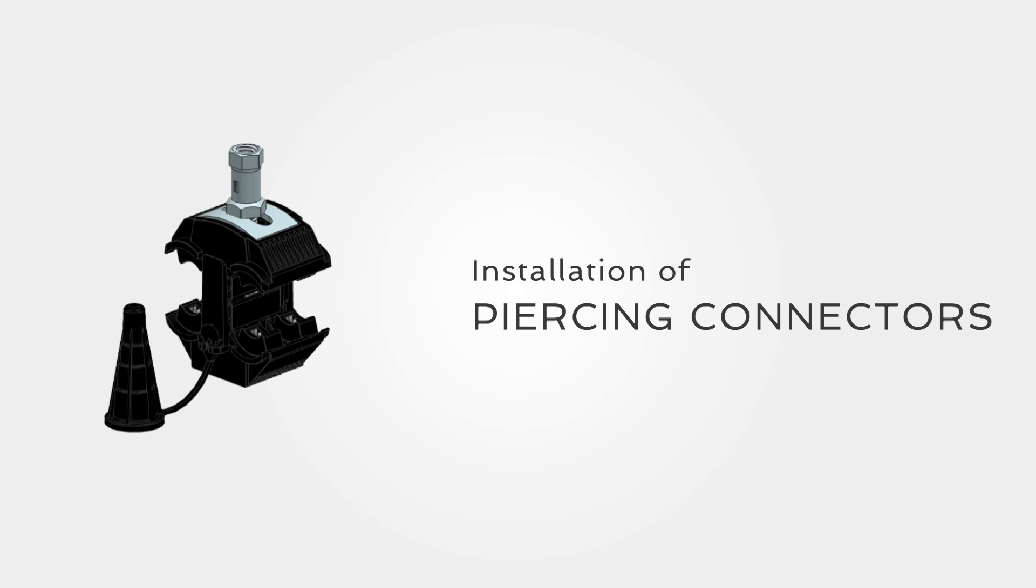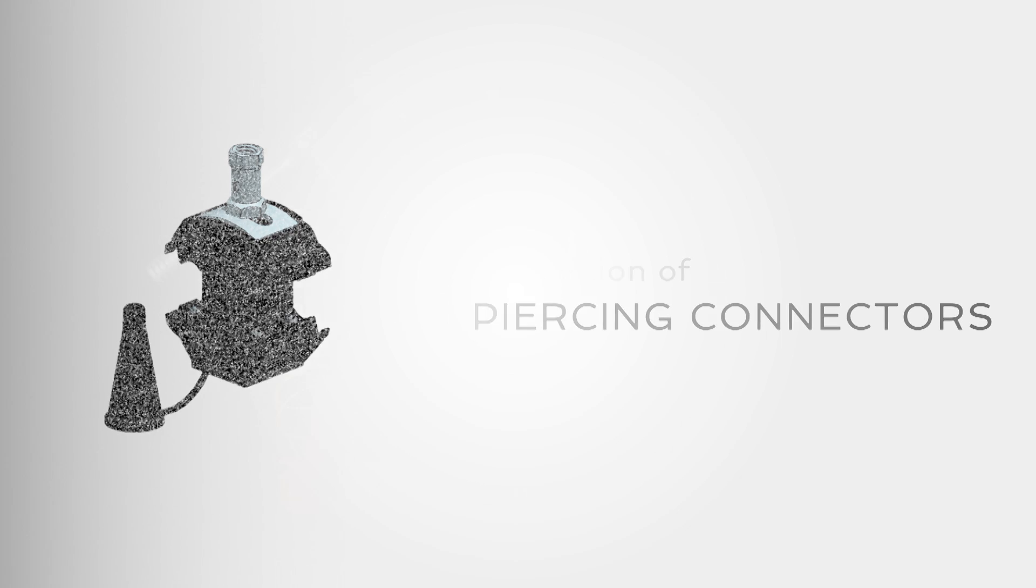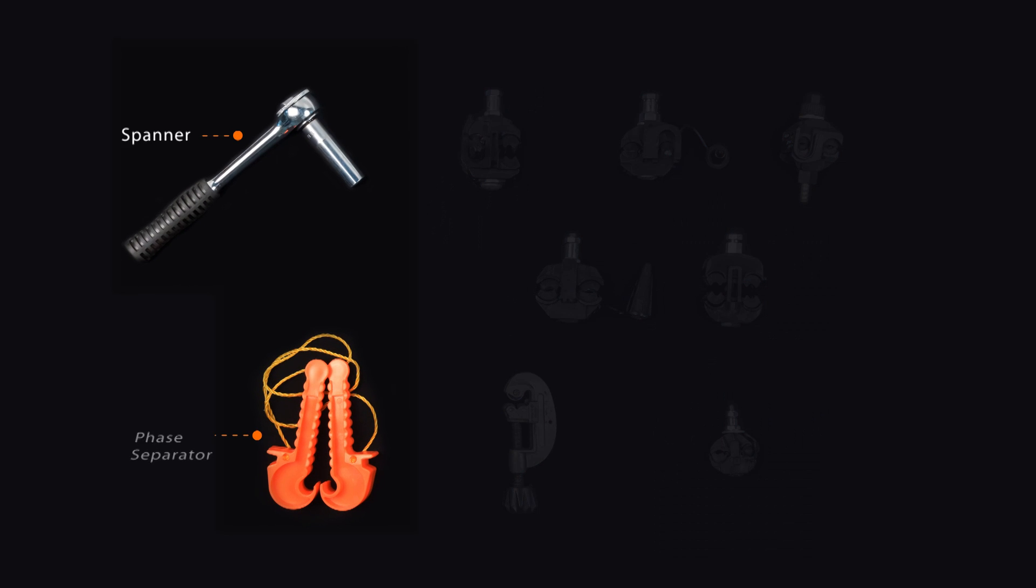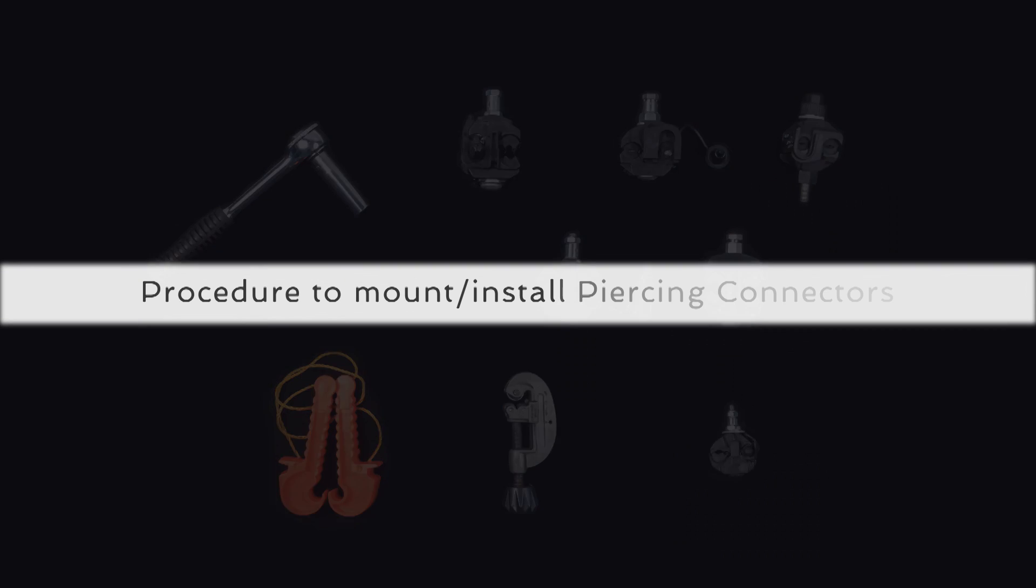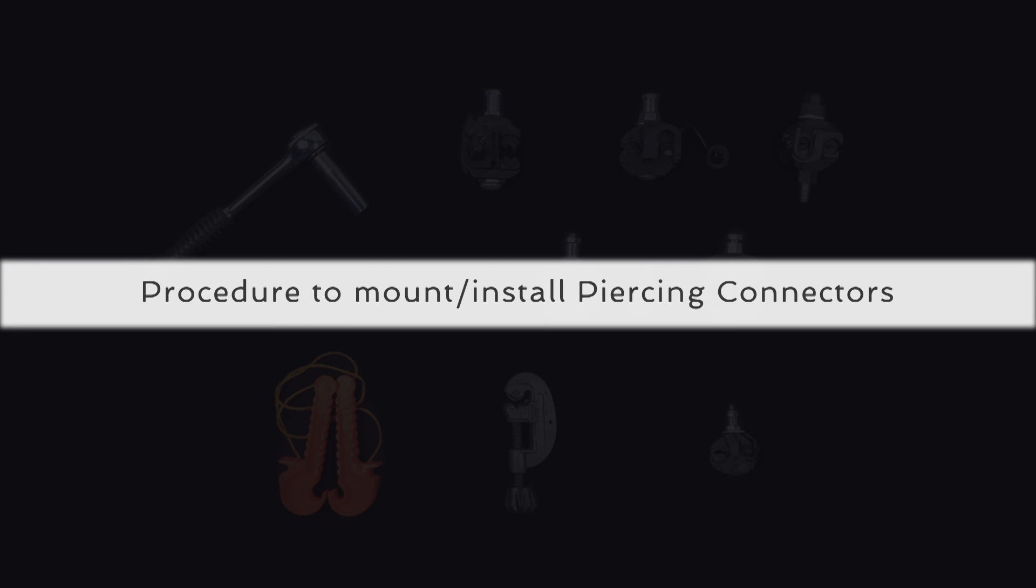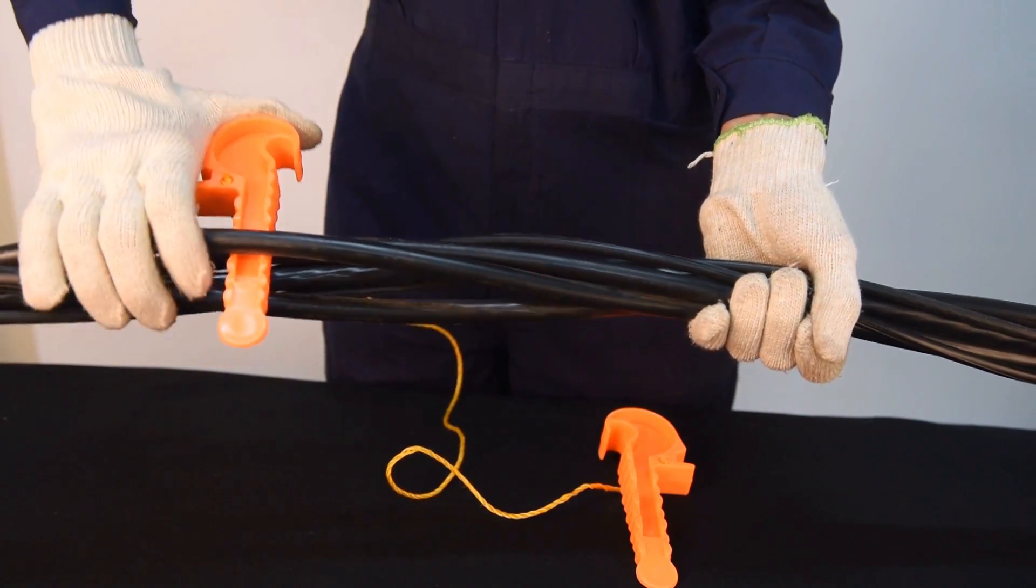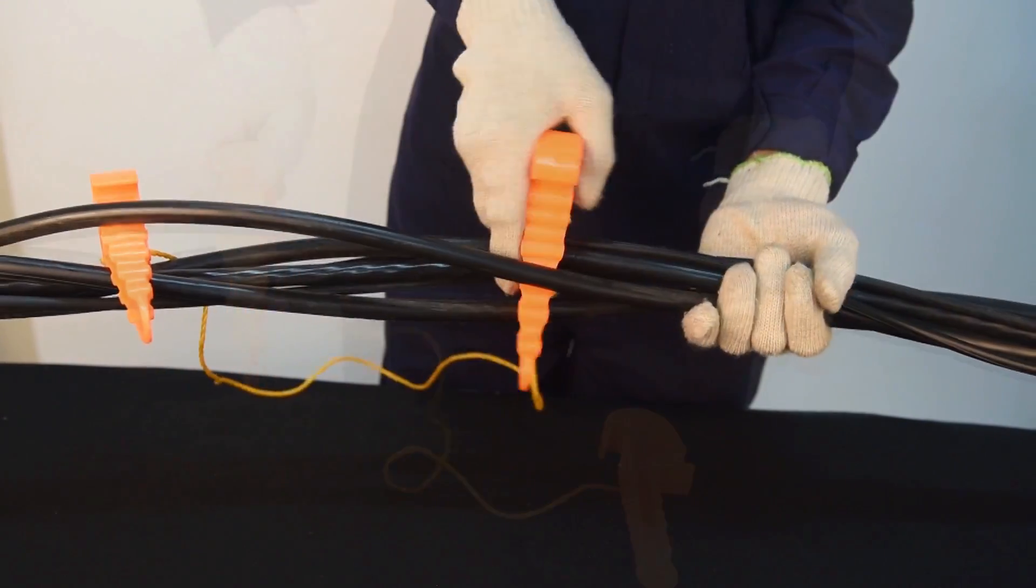Installation of piercing connectors. The various tools required during installation are spanner and face separator. Let us now understand the correct procedure to mount or install piercing connector on the cables. Identify the correct cable from the bundle and separate it from the other cables using a face separator.